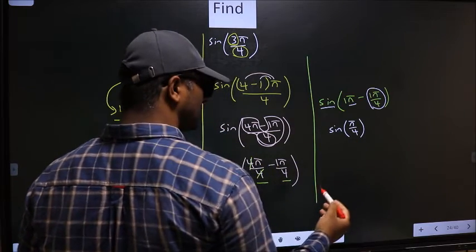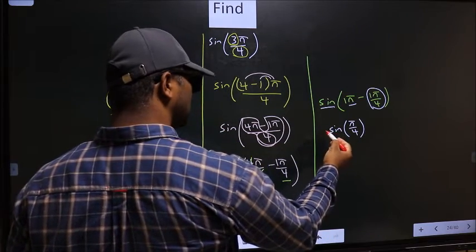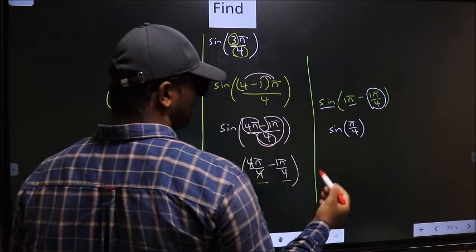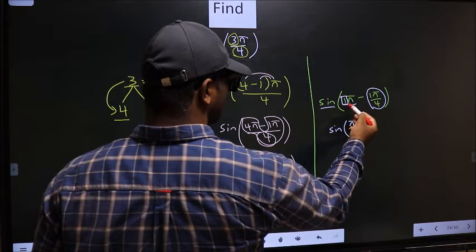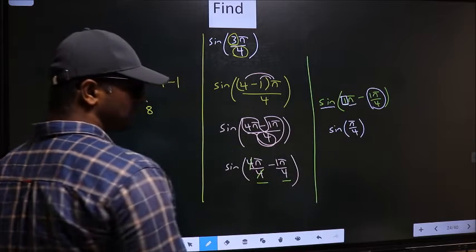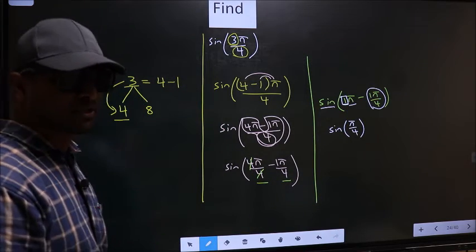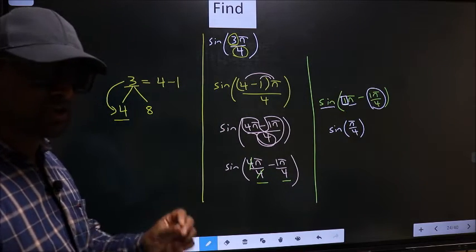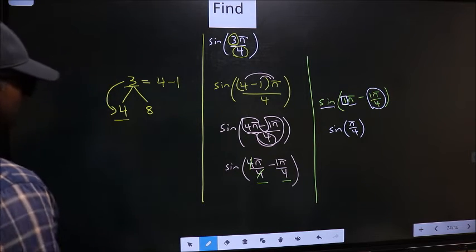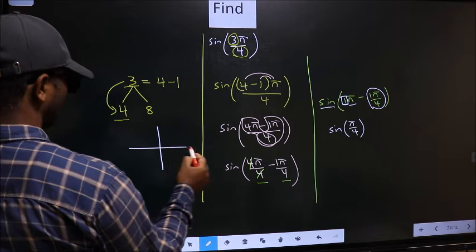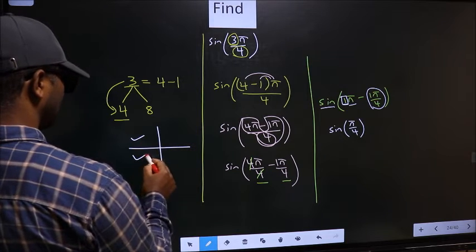Now the question is will we get here plus or minus? To answer that, you look at the number before π which is 1, and 1 is odd, and all the odd multiples of π lie in the second or in the third quadrant.